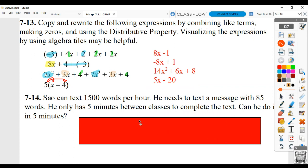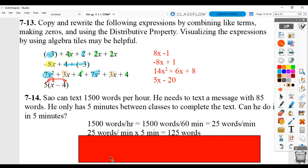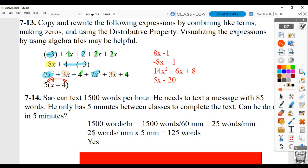For 7.14, we said there was a number of different ways you could set it up and solve it. What I did is I said, if he can do 1,500 words in an hour, that means he can do 1,500 words in 60 minutes. I divided to get the unit rate. He can do 25 words per minute. Since he has 5 minutes between classes, 25 words per minute times 5 minutes means he should be able to text 125 words. That means he should not have problem texting a message that has 85 words. So yes, he can do it in 5 minutes.